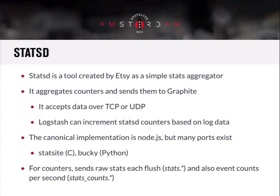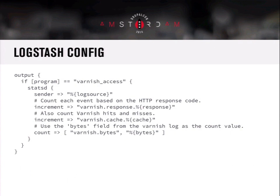One last performance counters tool is called StatsD. It was originally created by Etsy, written in Node.js, and accepts data over TCP or UDP. The main usage is to increment counters. There's a canonical implementation in Node; if you don't want to deploy Node, there's Bucky in Python and Statsite in C. For each counter you keep — you can also keep gauges — you can get a raw count of stats between whatever interval you're collecting on, or you can get event counts per second. By default, it'll give you both metrics — e.g., there were 200 hits to Varnish, or given a 20-second flush interval, that's about 10 requests per second.